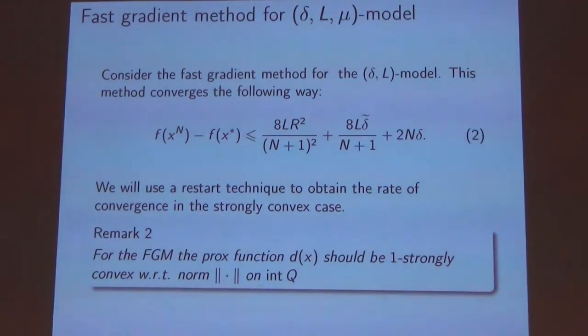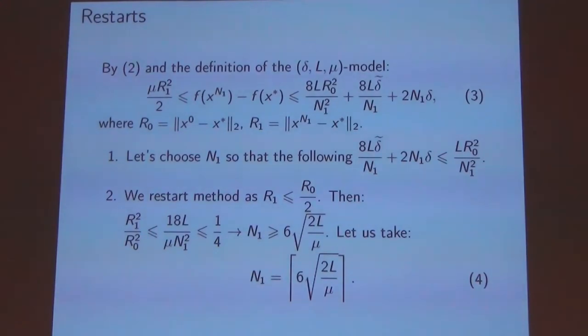To obtain the rate of convergence for the Delta-L mu model we will use the restart technique. Let me briefly describe how we construct it. At first I want to balance the right part with an exactness in the first point.